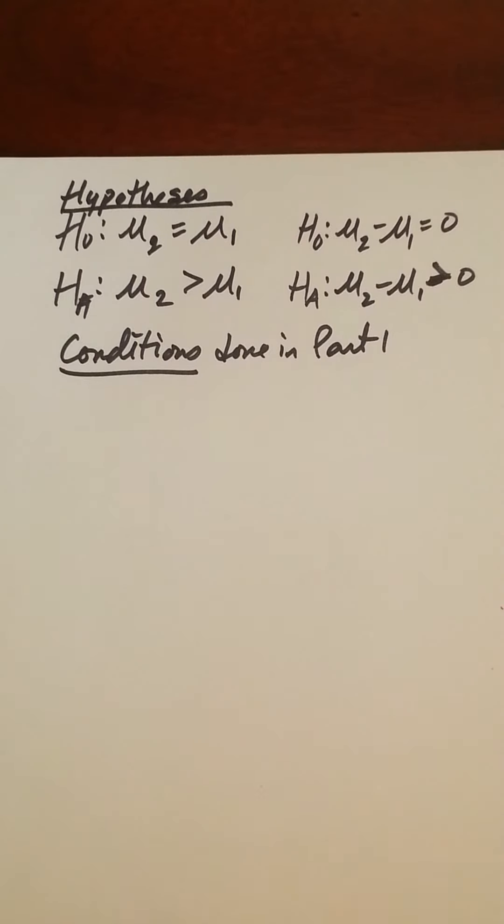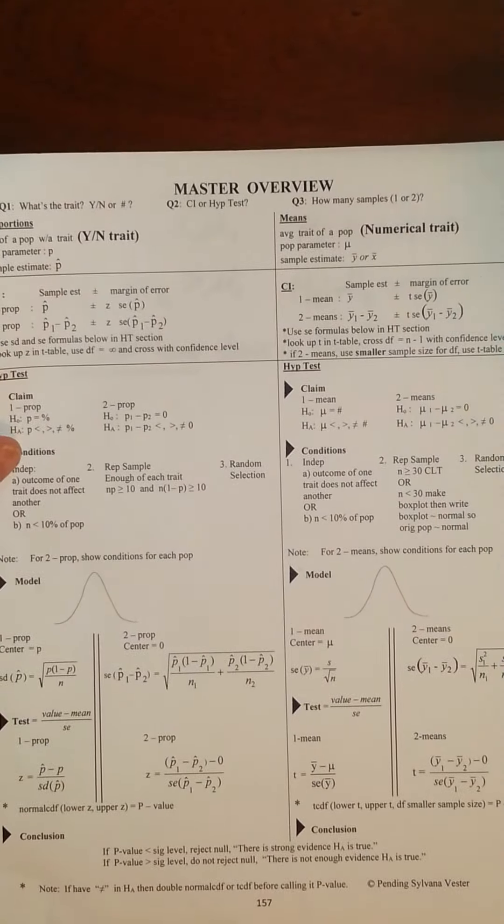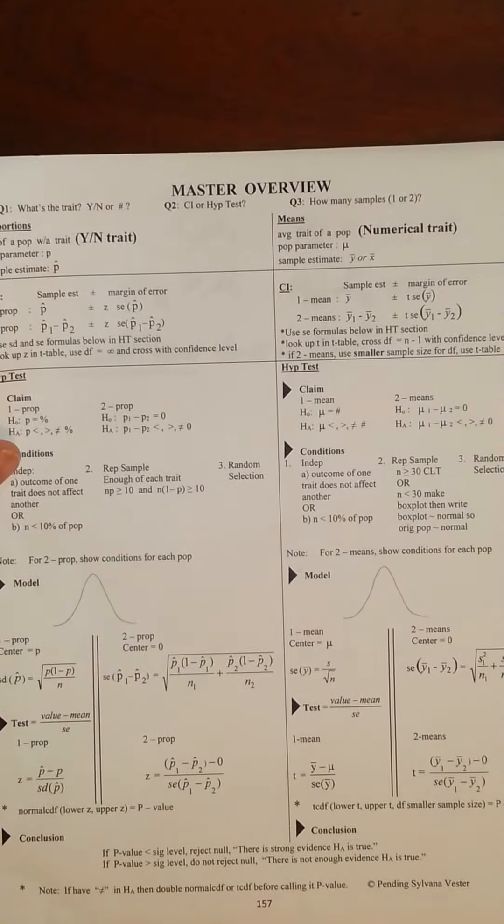So now that we're kind of caught up, let's take a look at our master overview. If we were following our master overview to help us out, we would say the trait is numerical, sample, so I'd be on this side of the page. And then we're looking at a hypothesis test, so I'm at the bottom here. And it's two populations, so two means, so I'd follow this right here. So we've already got our hypotheses set up, which showed conditions. Now we're at the point of showing the distribution of the difference in the sample means.